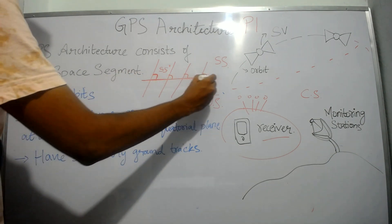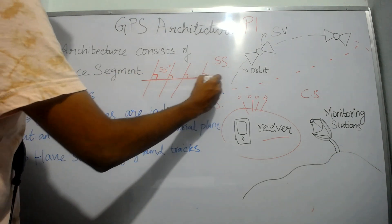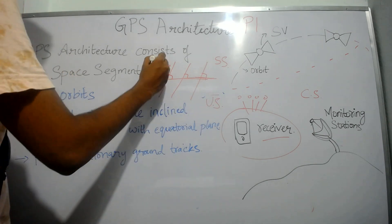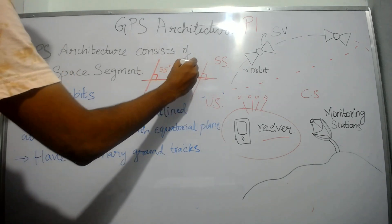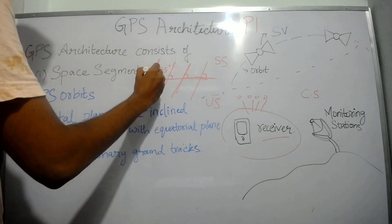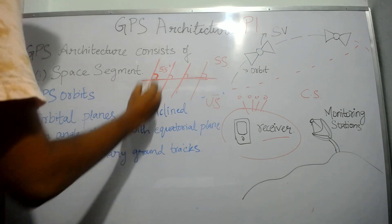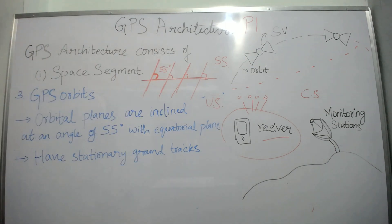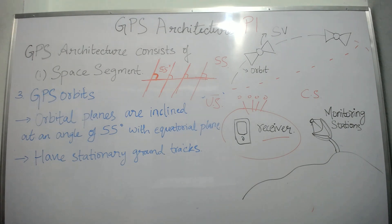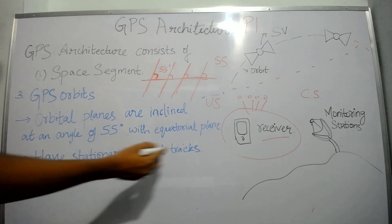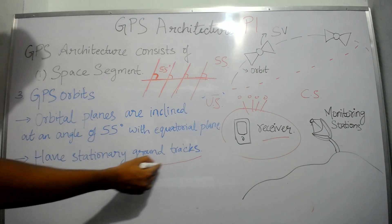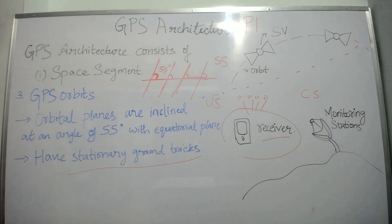The orbital planes are inclined at an angle of 55 degrees with the equatorial plane. Suppose this is the equator — these are the orbits at 55 degrees. And these orbits have ground stationary ground tracks which receive the signal.